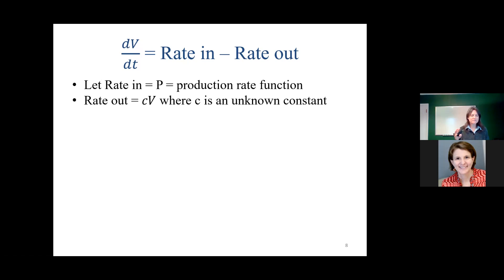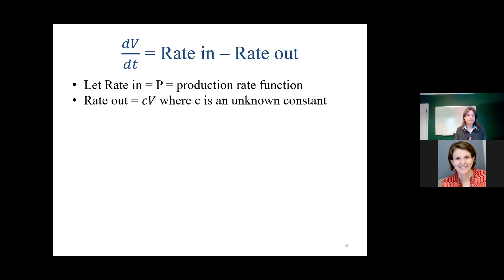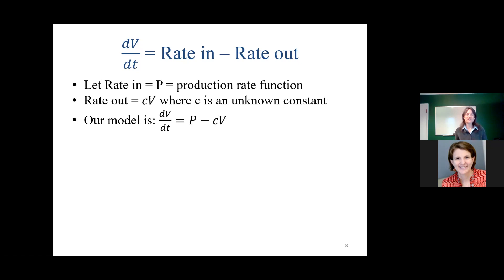That gives us a model: dV/dt equals P minus C times V. There's a mathematical term for this equation — I'd love for people to chat what you call that type of equation. We're getting a couple of different answers. Some people are saying 'differential equation' and somebody has said 'related rate,' which is kind of an interesting calculus topic. There was also a comment that the way the differential equation is set up is common on the AP exam — they talk about rates in this way, about this difference between rate in and rate out.